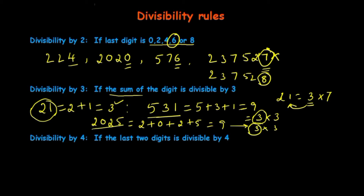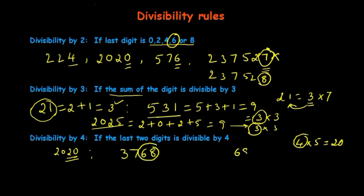The next one is divisibility by 4: if the last two digits are divisible by 4, then the whole number is divisible by 4. For example, 2020 — the last two digits are 20, and 20 is divisible by 4, so 2020 is divisible by 4. Another example: 3768 — take the last two digits, 68. Dividing 68 by 4 gives 17 with remainder 0, so 3768 is divisible by 4.